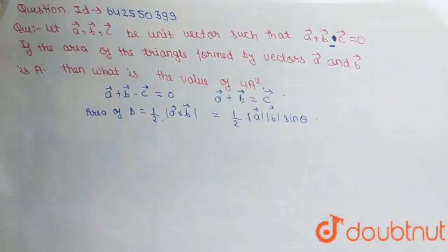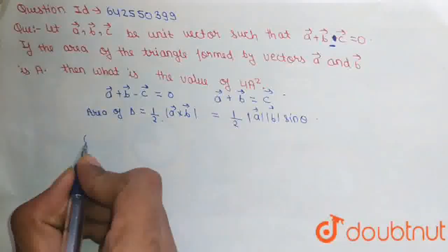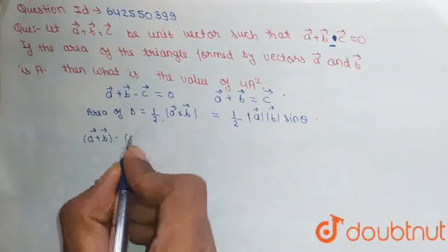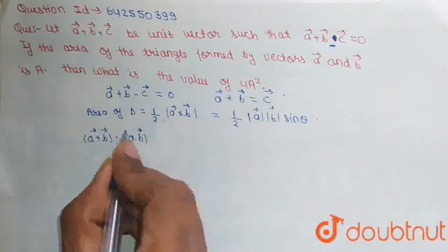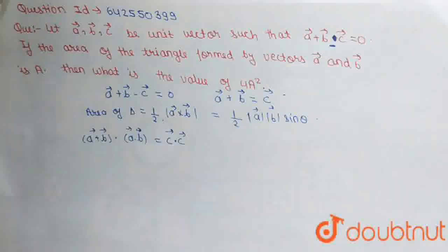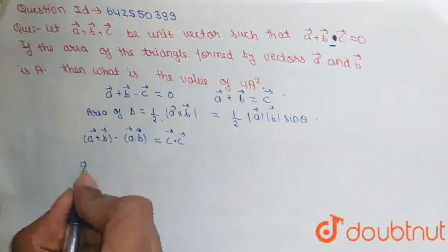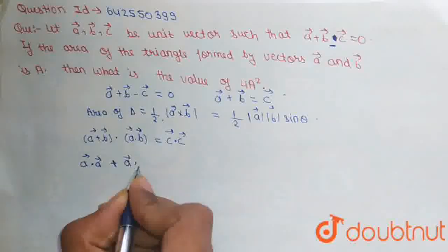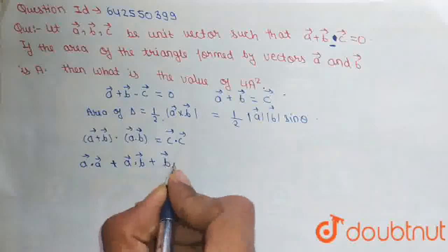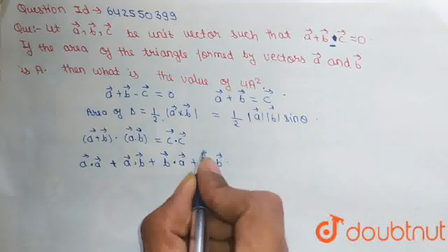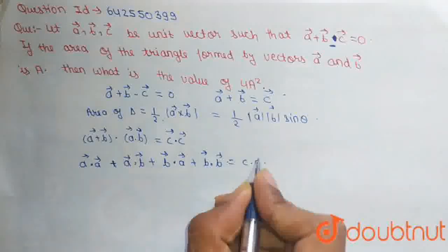Sin theta means the angle between A vector and B vector. Now we can write (A plus B) dot (A plus B) is equal to C dot C vector. We simply do the multiplication, so this will be A dot A vector plus A dot B vector plus B dot A vector plus B dot B vector, and this is equal to C dot C vector.